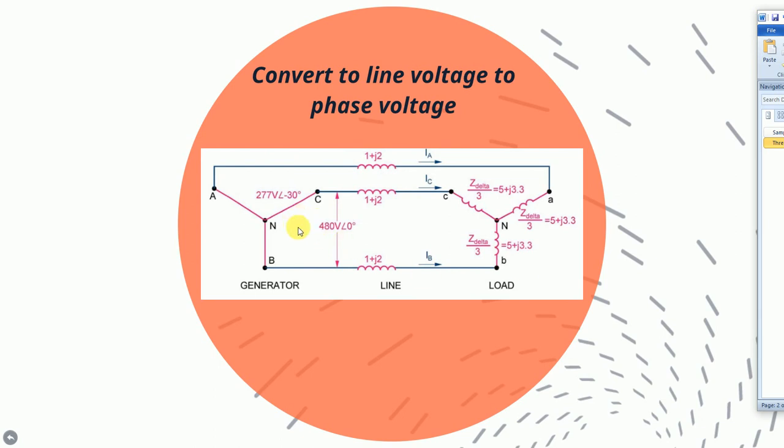Now the drop along a phase includes the transmission line impedance and the load impedance all in a single line. We also have the phase voltage for that phase as the 277 volts. Now we can use Ohm's law to solve this problem.